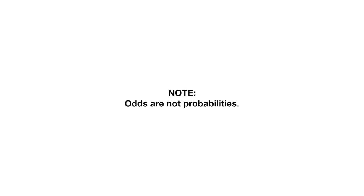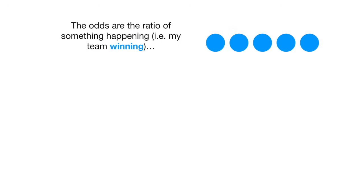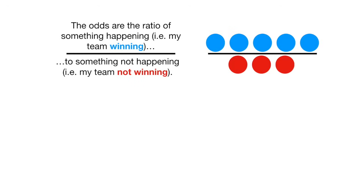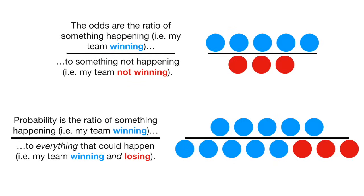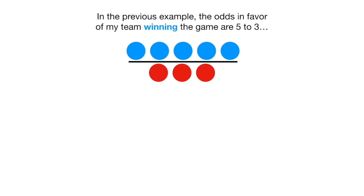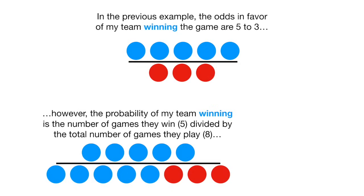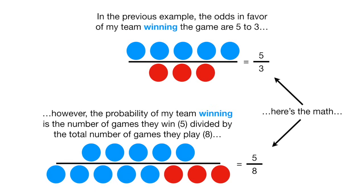Note, odds are not probabilities. The odds are the ratio of something happening, i.e. my team winning, to something not happening, i.e. my team not winning. Probability is the ratio of something happening, i.e. my team winning, to everything that could happen, i.e. my team winning and losing. In the previous example, the odds in favor of my team winning the game are 5 to 3. However, the probability of my team winning is the number of games they win, 5, divided by the total number of games they play, 8. For the odds, we have the ratio of 5 to 3, and for the probability we have the ratio of 5 to 8.